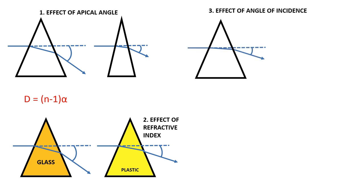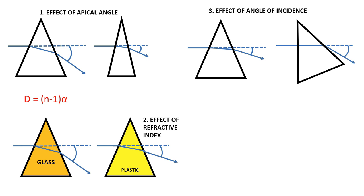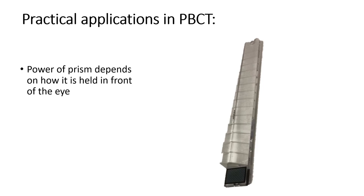The third and most practically important factor affecting the angle of deviation is the angle of incidence. When the incident ray is perpendicular to the first refracting surface — meaning the angle of incidence is zero — all refraction happens at the second surface only, and the angle of deviation is maximum. This position is called Prentice's position and is the position of maximum deviation for any prism. By just tilting the position of the prism with respect to the incident light, the deviation through the prism — and therefore the effective power — can change.